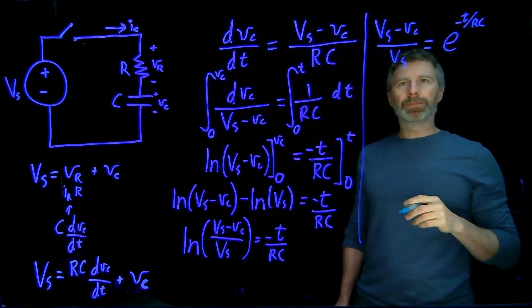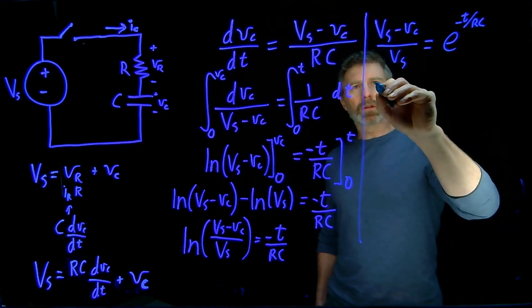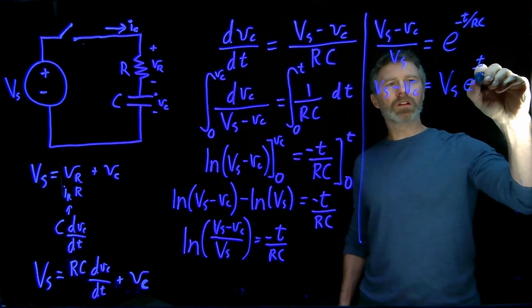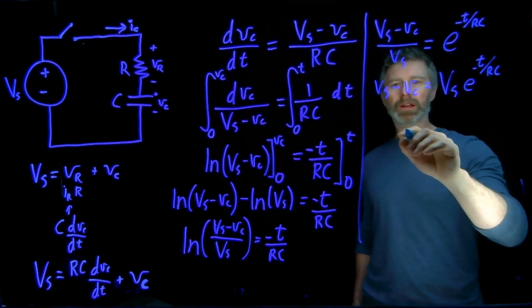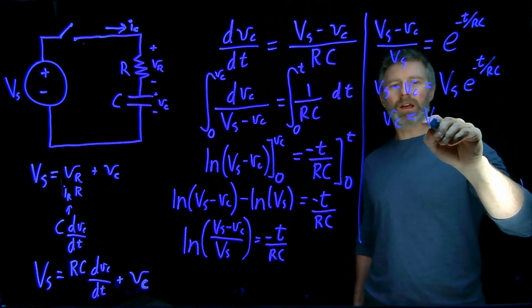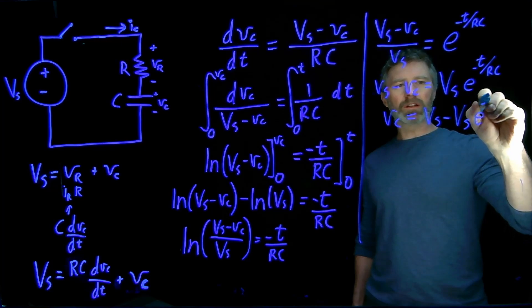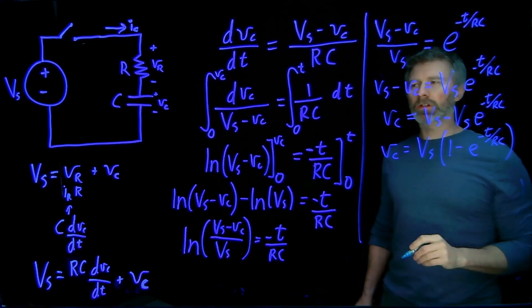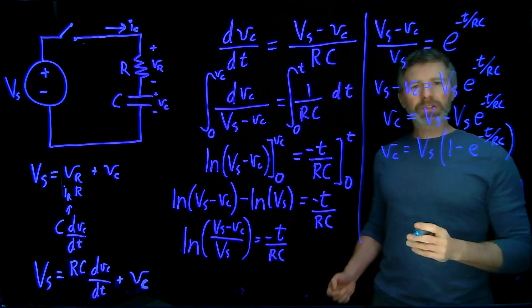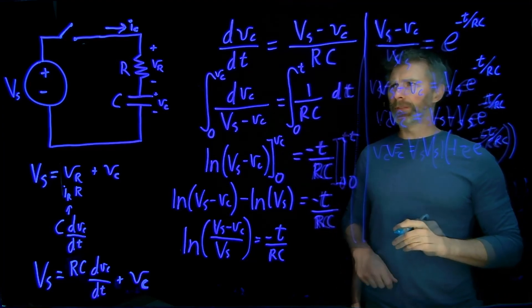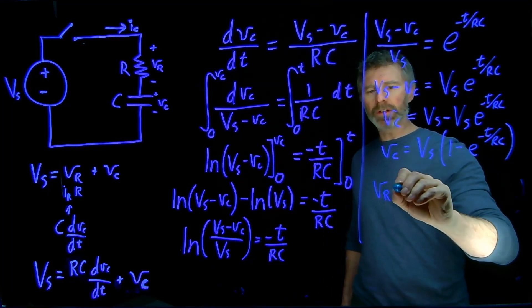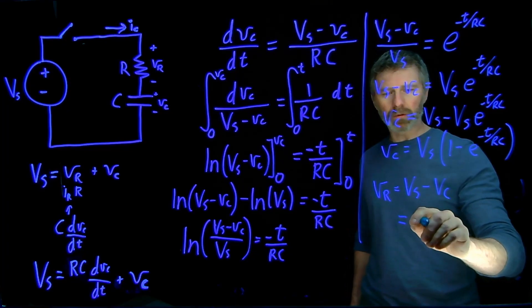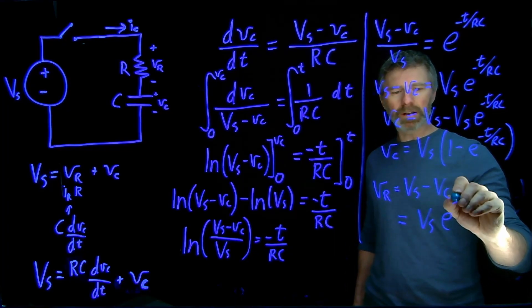We're trying to get an expression for Vc — how the voltage across the capacitor changes over time. With a little algebra: Vs minus Vc equals Vs times e to the negative t over RC, which rearranges to Vc equals Vs times (1 minus e to the negative t over RC). That's our expression for voltage across the capacitor. From Kirchhoff's voltage law, Vr equals Vs minus Vc, so Vr equals Vs times e to the negative t over RC.